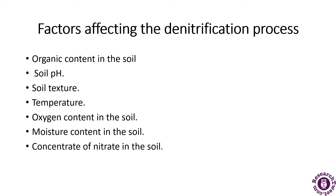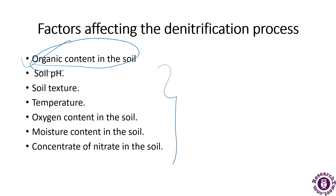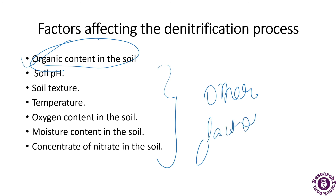The complete process of denitrification is influenced by many factors. One of the main factors is the organic content of the soil — organic matter is the only source of nutrients for bacteria, so soil bacteria require a source of readily available organic matter from plants, soil, or additional sources. Other factors include soil pH, soil texture, temperature, oxygen content, moisture content, and concentration of nitrate in the soil.